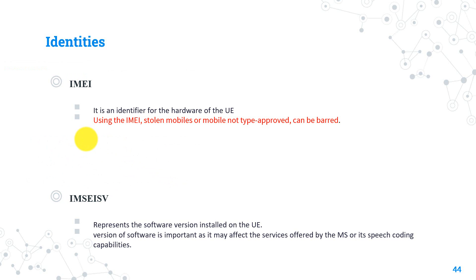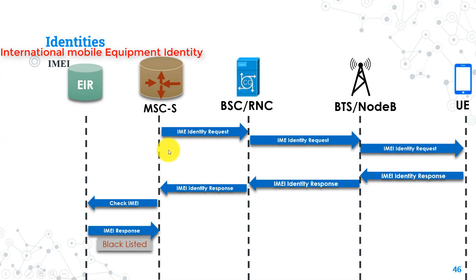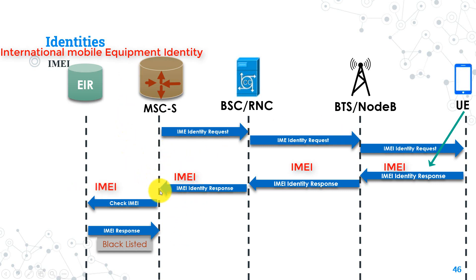From a signaling perspective, here is how the network determines whether a mobile handset is blacklisted, graylisted, or whitelisted. First, the MSC requests the IMEI number from the user equipment by sending the signaling message 'IMEI Identity Request.' This request is sent from the MSC to the BSC or RNC, passing through the BTS or Node-B, and finally going to the user equipment. The user equipment replies with the 'IMEI Identity Response' message, sent from the UE through the BTS or Node-B, going to the BSC or RNC, and then finally to the MSC. The MSC then takes the IMEI from the message and initiates a new message called 'Check IMEI,' which is sent from the MSC to the EIR.